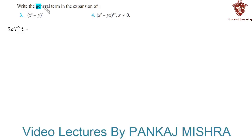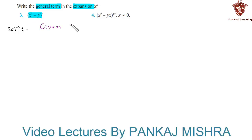Write the general term in the expansion of (x² - y)⁶. Let us see the solution. The given expression is (x² - y)⁶.